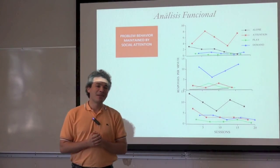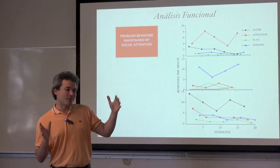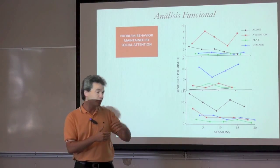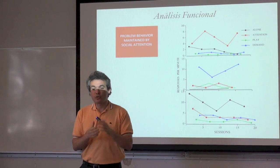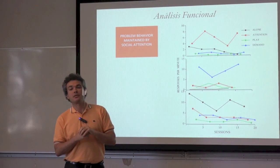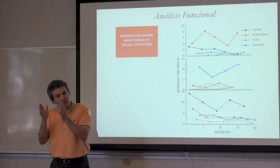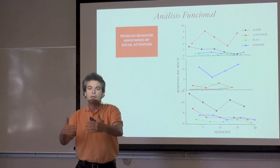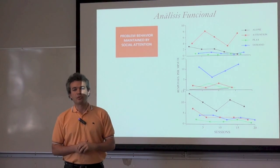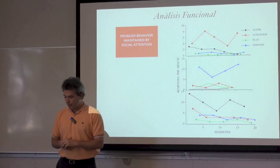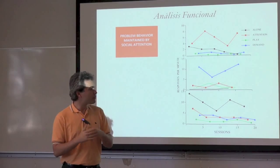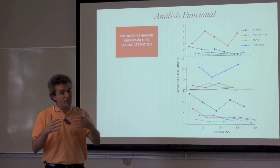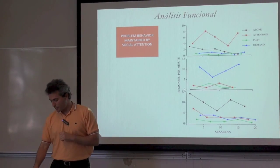In the attention condition, the experimenter or caregiver is ignoring the client — that's the antecedent. As soon as the behavior occurs, even a low magnitude instance, the experimenter presents attention, usually in the form of verbal and physical comfort. That arrangement continues over the duration of the session and is repeated a number of times. If behavior is high during this condition, we assume it is maintained by attention.